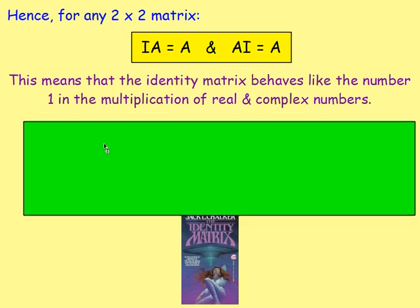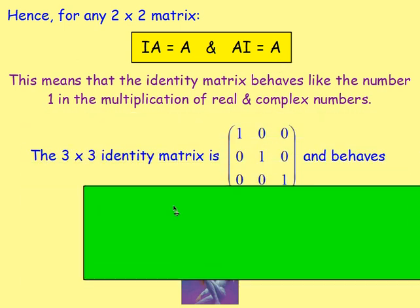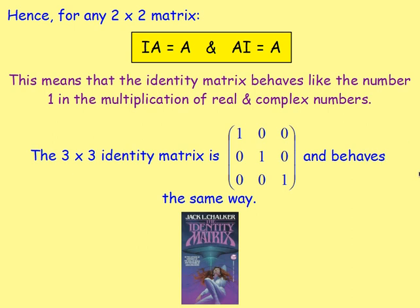Similarly, if you have the 3x3 identity matrix, well, it behaves the exact same way. The leading diagonal is all going to be 1, and all the other entries are 0.